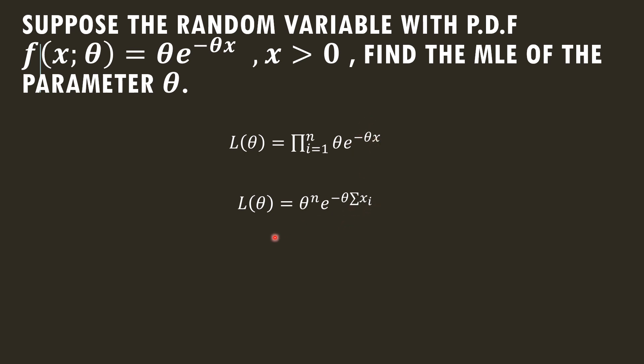Here x is variable, so it becomes summation xi. Taking log both sides for the log likelihood function, when we take log, these two terms are in the product and they will be converted into sum. This n is in the power, so log of θ^n will be n ln θ.